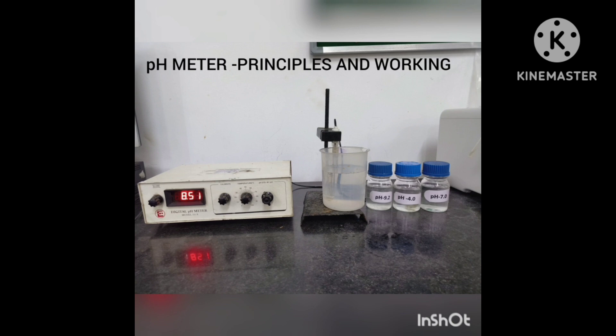Now what is pH? pH is the negative log of concentration of H+ ions in the solution. To detect the H+ ions in the solution, we need a pH meter.